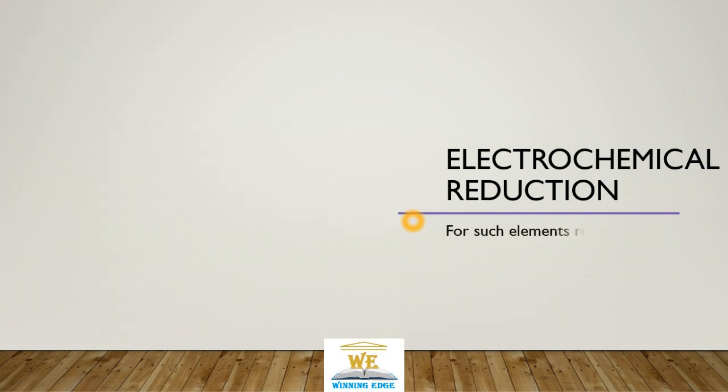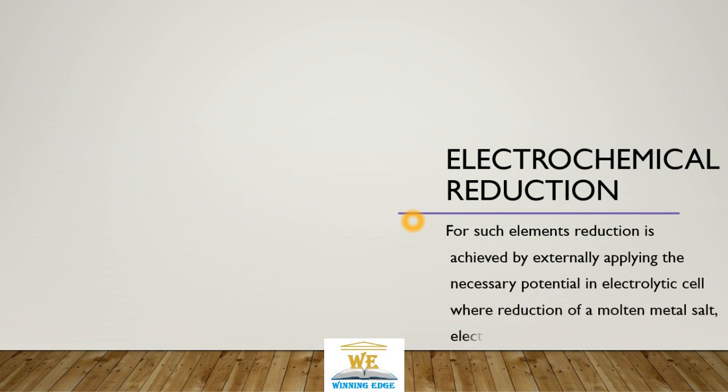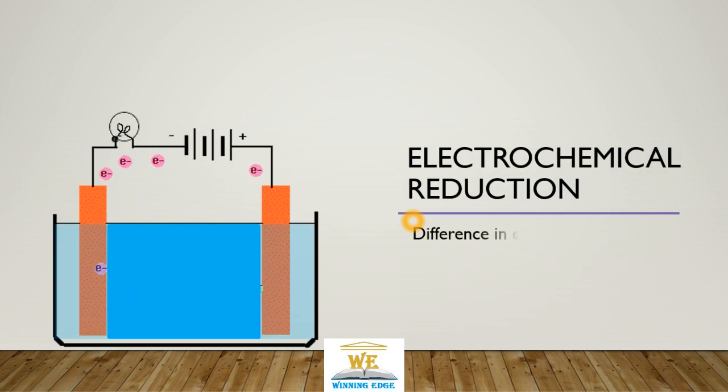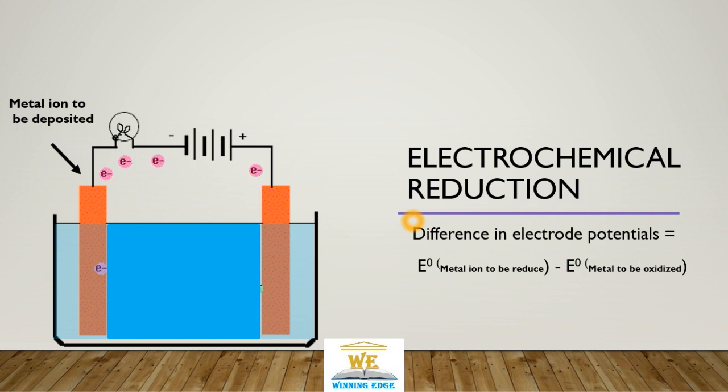For these elements, electrons are supplied externally. By applying an excessive potential in the electrolytic cell, where reduction of molten metal salts is done. We are supplying the electrons externally and the ions get reduced on the cathode. The difference in electrode potentials equals metal to be reduced minus metal to be oxidized. The metal is deposited on the cathode side, where electrons are supplied externally. And the potential difference should be sufficient to compensate the standard electrode potential of a particular element.